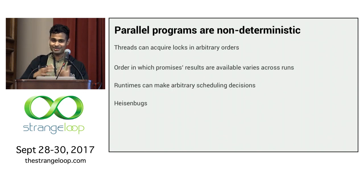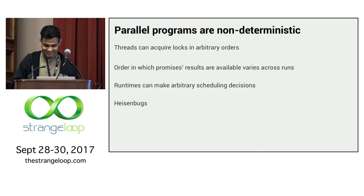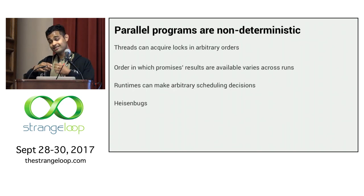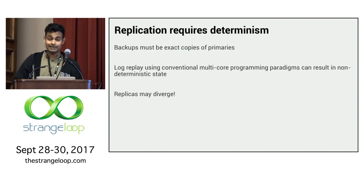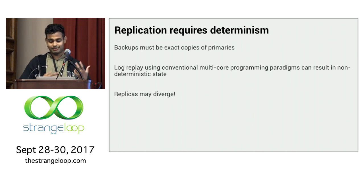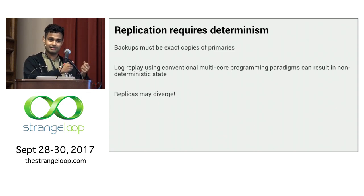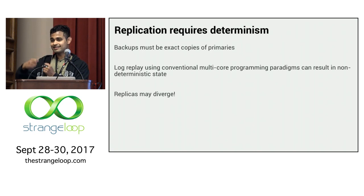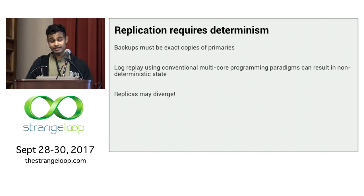Probably the most famous example of non-determinism in parallel code are Heisenbugs — bugs in parallel programs that are difficult to diagnose because they do not deterministically reproduce given the exact same input. This makes parallel programs really difficult to debug. Yet we need determinism for replication: backups need to be exact copies of primaries. Given the same log input, we're not sure the replica will end up with exactly the same state as the primary, which would cause replicas to diverge.